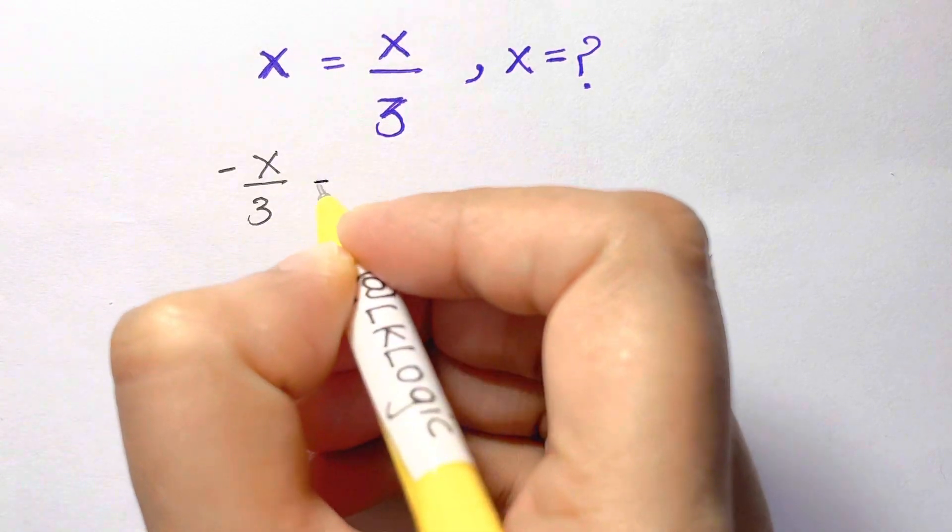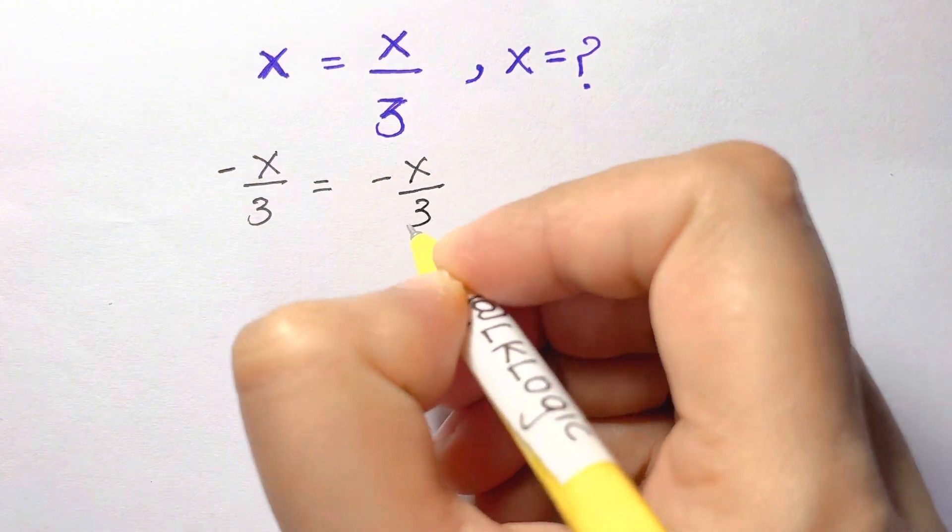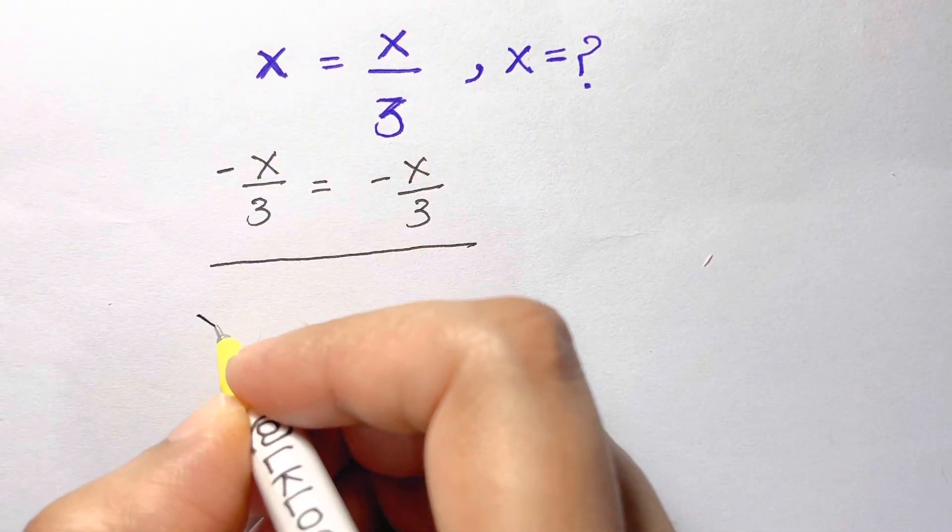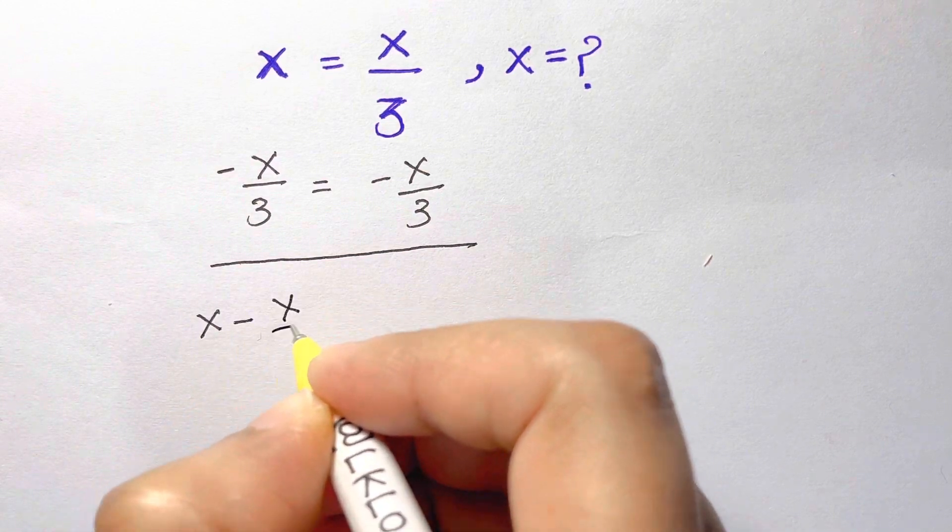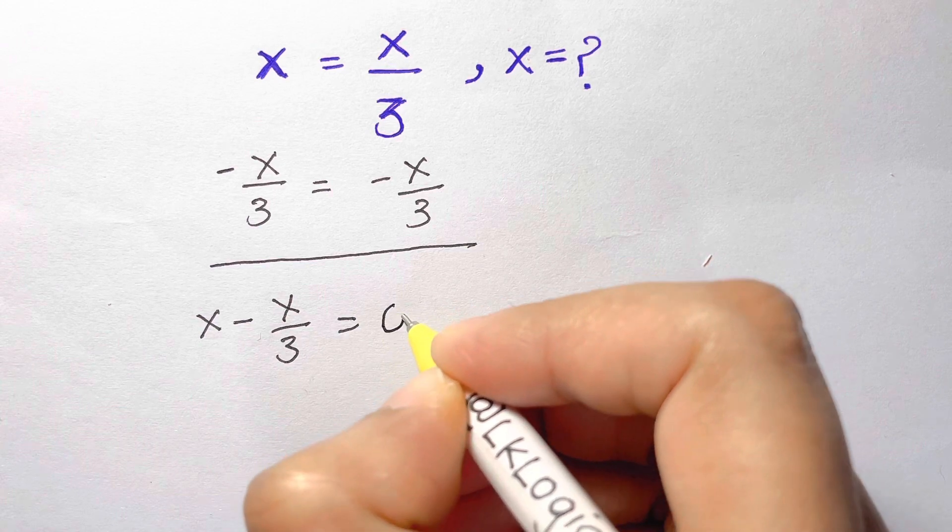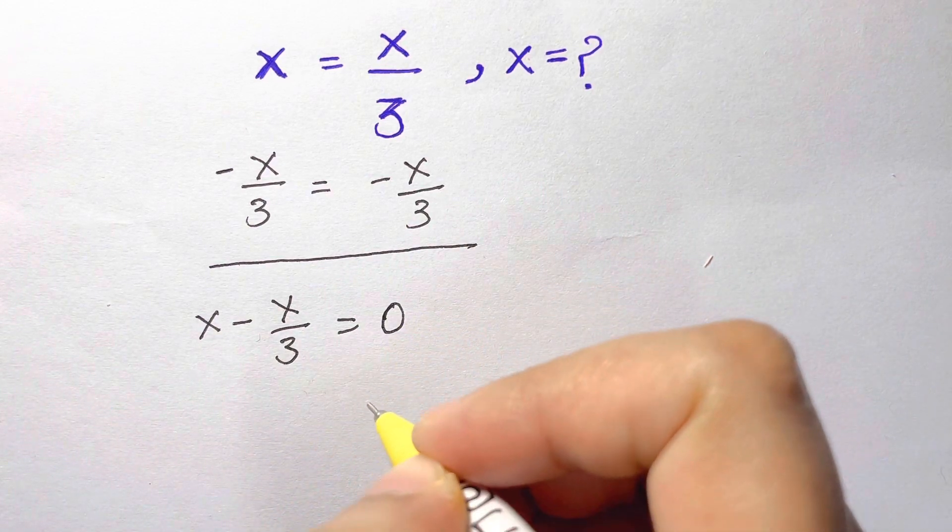So here we have x over 3, and here negative x over 3. When you subtract, what do you get? This side you have x minus x over 3 is equal to x over 3 minus x over 3 is 0.